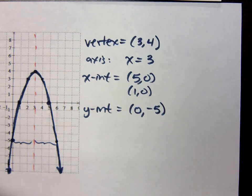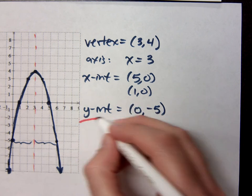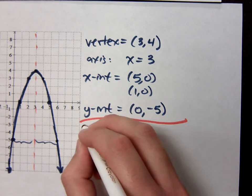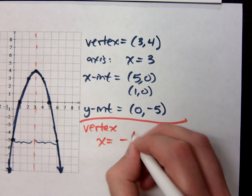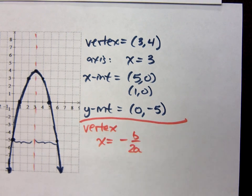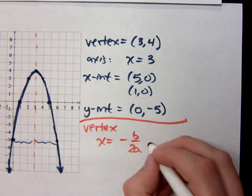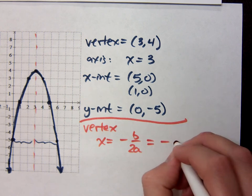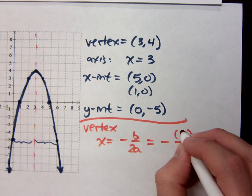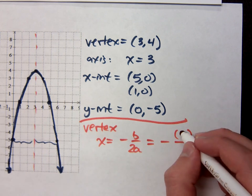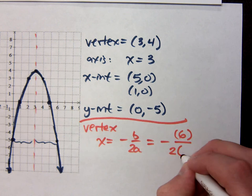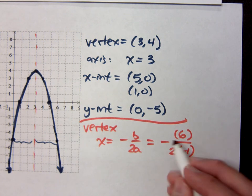Now, further analyzing this guy, we know that for the vertex, the x-coordinate is negative B over 2A. So that means for me, negative, what was B in this problem? Well, is it the original? Go back to the original coefficients. That's 6, 2 times what was A? Negative 1. What's negative 6 over negative 2?